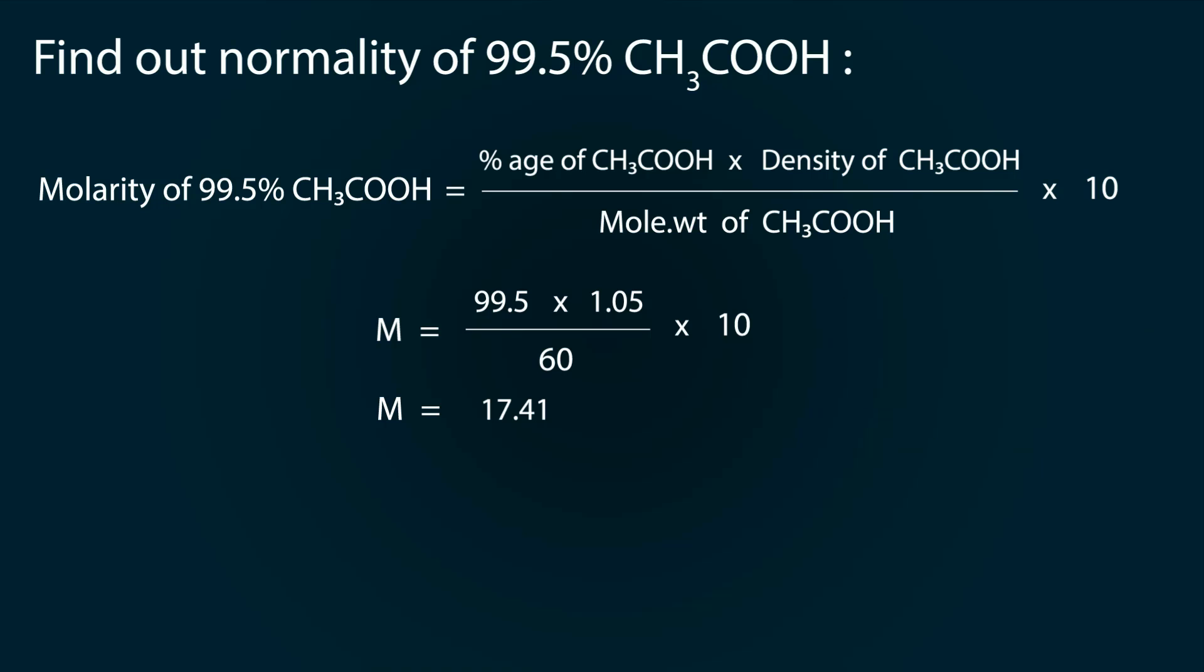Multiply by 10 and we get molarity as 17.41. Normality equals molarity times acidity or basicity. So 17.41 multiplied by 1, where 1 is the acidity, gives us a normality of 17.41.